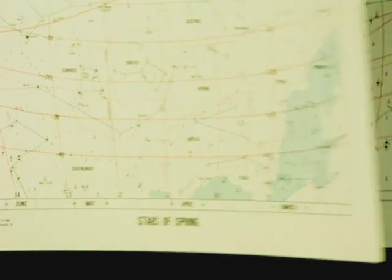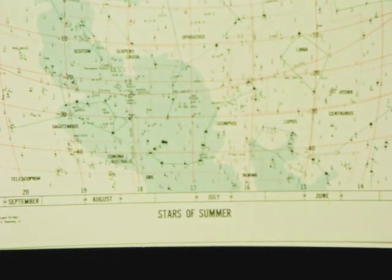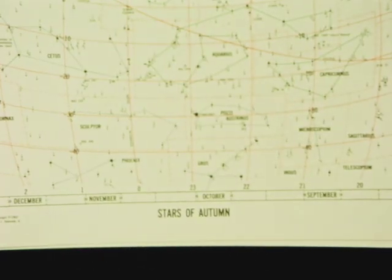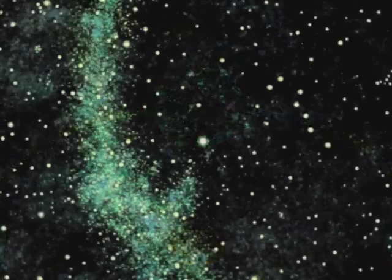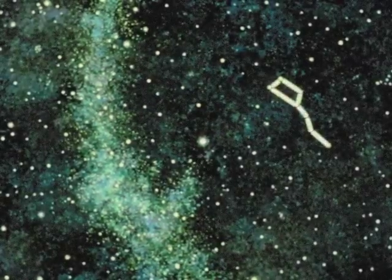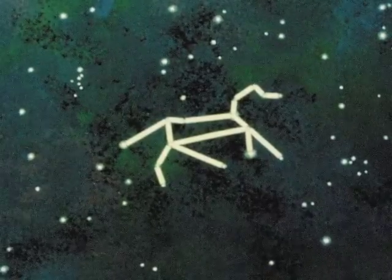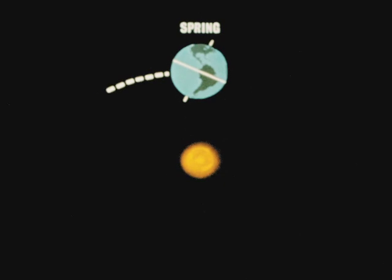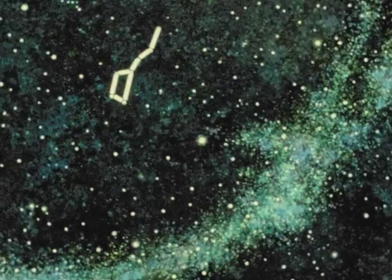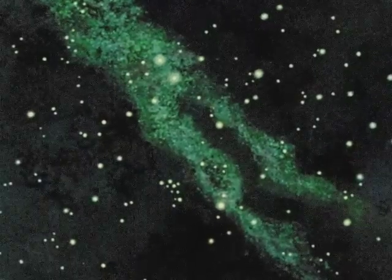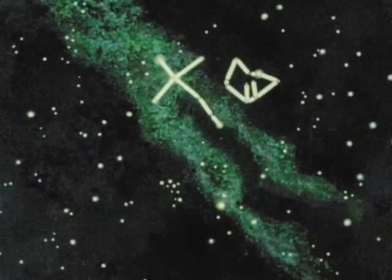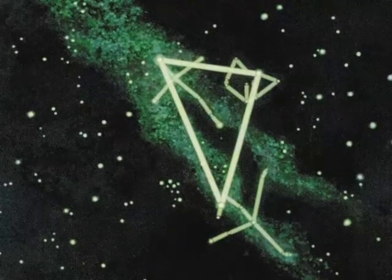Stars and constellations are often grouped according to the seasons of the year when they are easiest to see. On the first day of spring, in the northern sky at about eight in the evening, the Big Dipper is above and east of the North Star. In the southern sky, the stars of the constellation Leo are prominent — the appearance of Leo the Lion announces the coming of spring. In summer, the Big Dipper is high in the sky at about 8 p.m., and in the southern sky three bright stars form an easy-to-find triangle: Deneb in the Northern Cross, Vega in Lyra, and Altair in the Eagle.